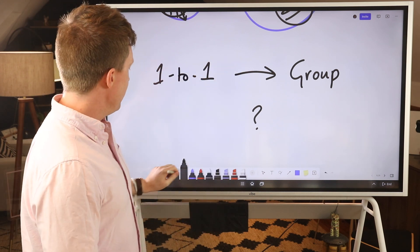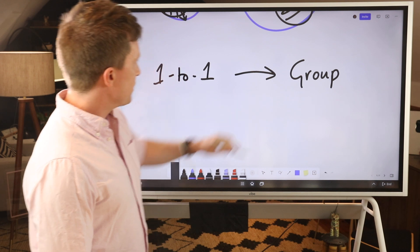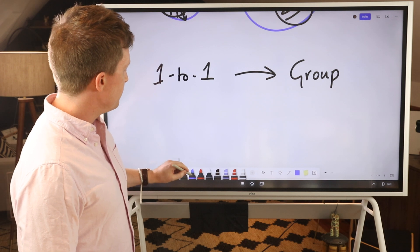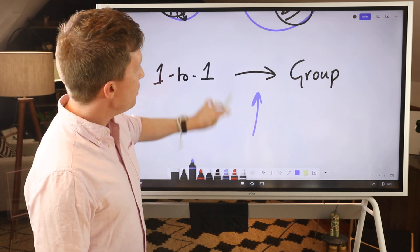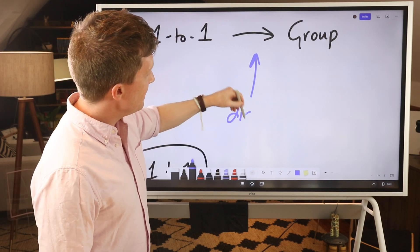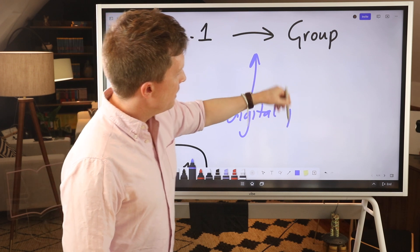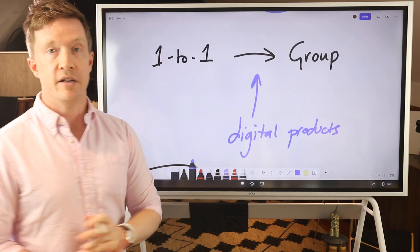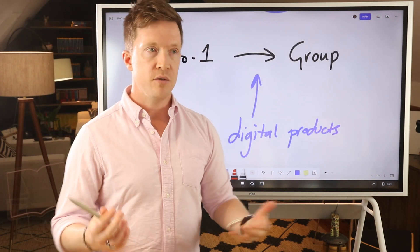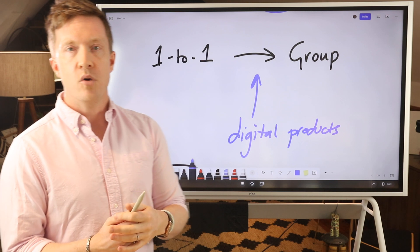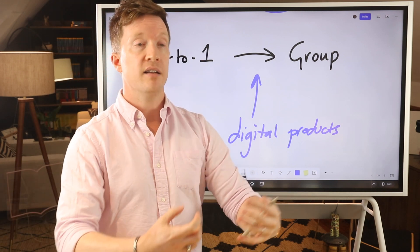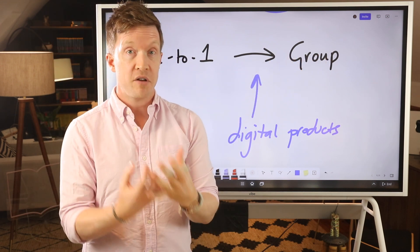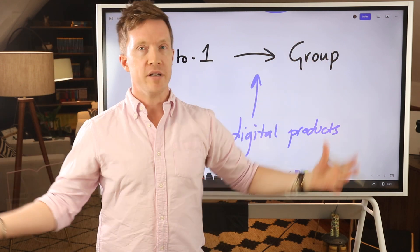So what do we need to do here instead of going from one-to-one to group, what do we need to put in here? Well, what we put in the middle is digital products. And this is essentially how I built my main business, StoryLearning.com. So I started off as a language teacher, teaching one-to-one. Then when I started working online, I could work with higher paying clients. But then rather than offering group lessons, I started building my digital product business, and that created a huge audience for myself.